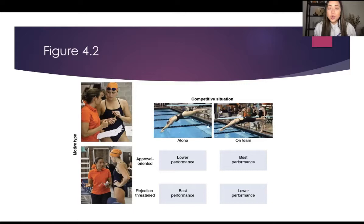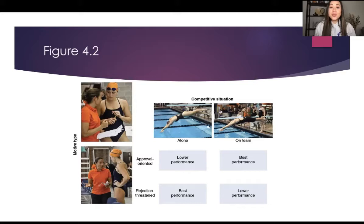As opposed to if they're approval-oriented and swim with a team — they're motivated to do well because they get that approval from their teammates. For the rejection-threatened athlete, if losing and disappointing teammates is the worst thing that can happen, their motivation to swim on a team isn't going to be very high. They don't want to do it because they're afraid of what's going to happen, so they're likely to perform lower or not even compete on a team. Whereas swimming alone, their performance is solely dependent on them — they're not going to disappoint anybody. This is an example of the interactional approach: individual characteristics and the competitive situation interact to affect motivation.